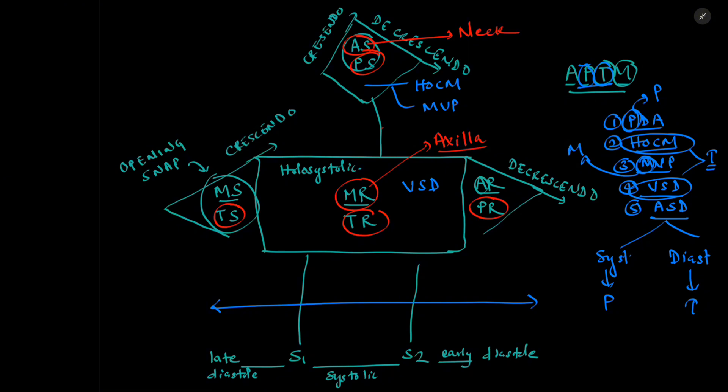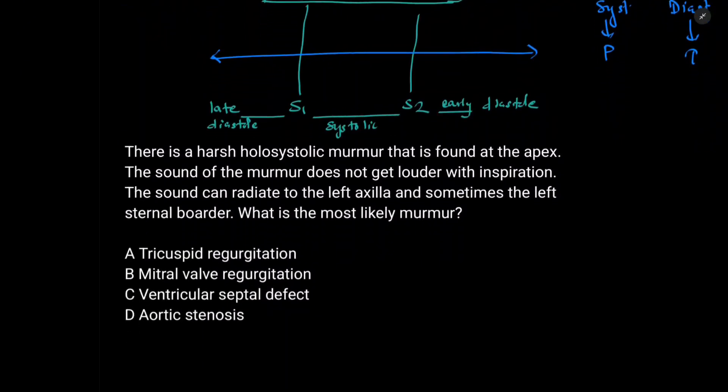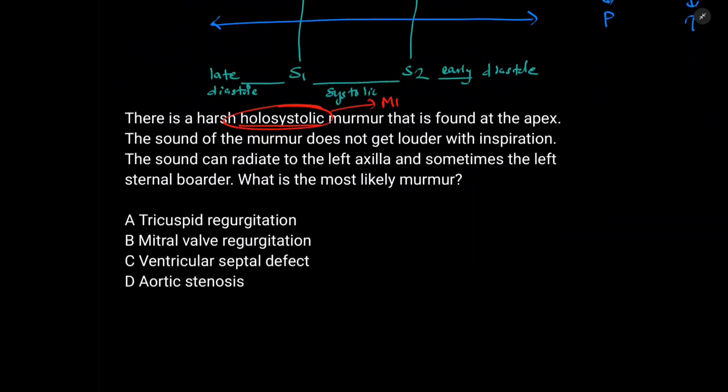Let's put this man into a test. I have a question designed. So it says, there's a harsh holosystolic murmur. With this word, three murmurs must come to your mind. The three represented by the trunk. So that is mitral regurgitation and tricuspid regurgitation and ventricular septal defect.